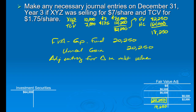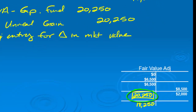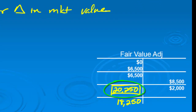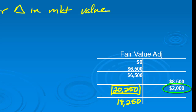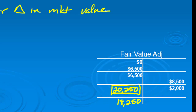The total adjustment was $20,250. Why? Because we want to end up with $18,250 as a debit in our fair value adjustment account. We had a credit of $2,000, so to get all the way over to a debit of $18,250 we had to clear away the credit balance and then add in that $18,250. So there's our adjustment.